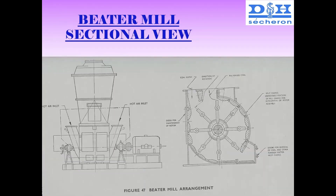The second type we are looking at is the beater mill, though it is normally not in use in many places. It is a very simple construction. From the inlet, coal enters and this is a rotor on which beater bars are available. The rotor keeps rotating and the coal keeps getting hit and getting crushed. Pulverized coal keeps happening in this direction.